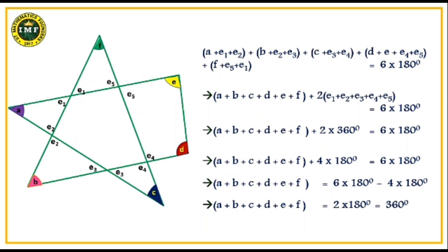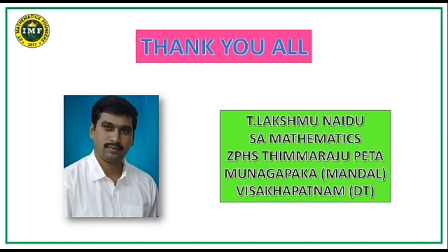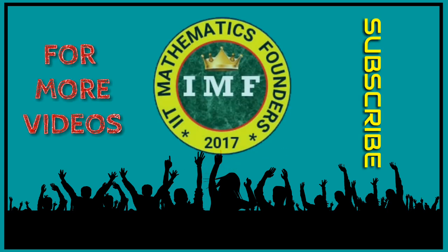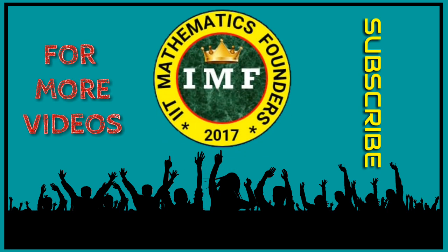This is the general method to find the sum of angles formed at the vertices of complex figures, making use of the concept that the sum of exterior angles of a polygon is always 360°. Using this, it becomes very simple to calculate. Thank you to all. I am T. Lakshmanaidu, S.A. Mathematics, ZPHS, Timuraj Peta, Monagopaka Mandel, Vishakapatnam District. Thank you.